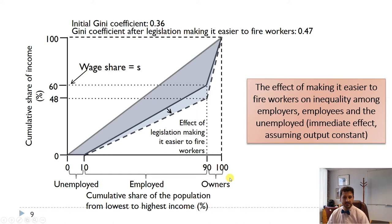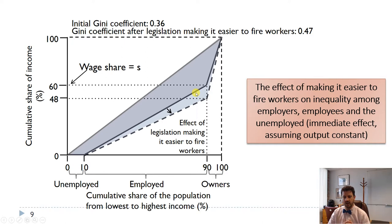If we make it easier to fire workers, the unemployment rate won't necessarily go up, but wages are likely to fall. In this case, wages fall from 60% of income to 48%, meaning owners get 52% instead of 40%. That increases the Gini coefficient from 0.36 to 0.47.